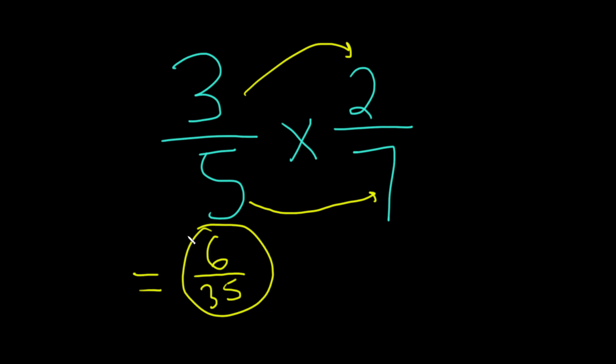And that would be the final answer, 6 over 35. You can't really do any simplification in this problem. You just end up with that as the answer. Most of the time, there is some simplification that can be done, but in this particular case,